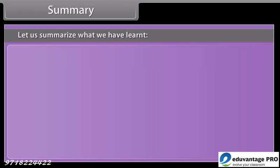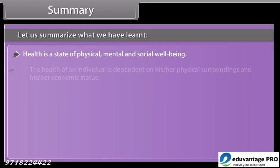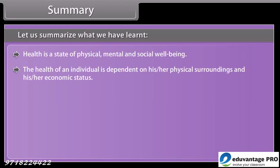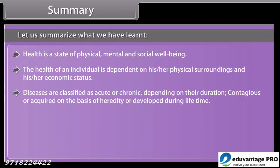Let us summarise what we have learnt. Health is a state of physical, mental and social well-being. The health of an individual is dependent on his or her physical surroundings and economic status. Diseases are classified as acute or chronic depending on their duration, or contagious or acquired on the basis of heredity or developed during lifetime.